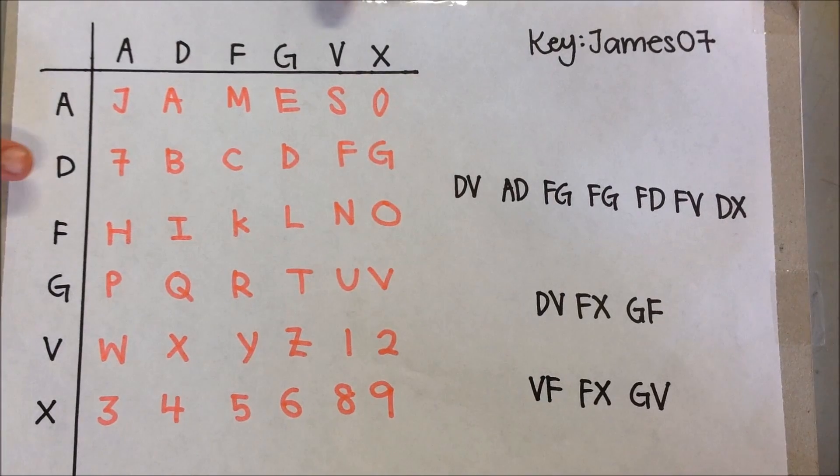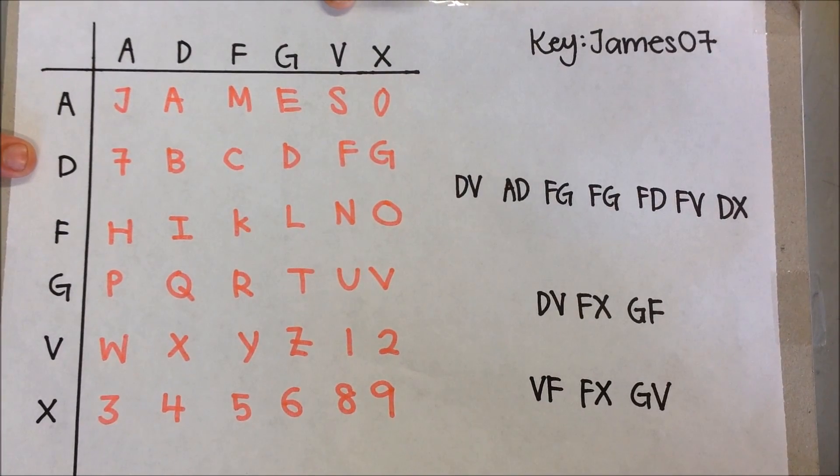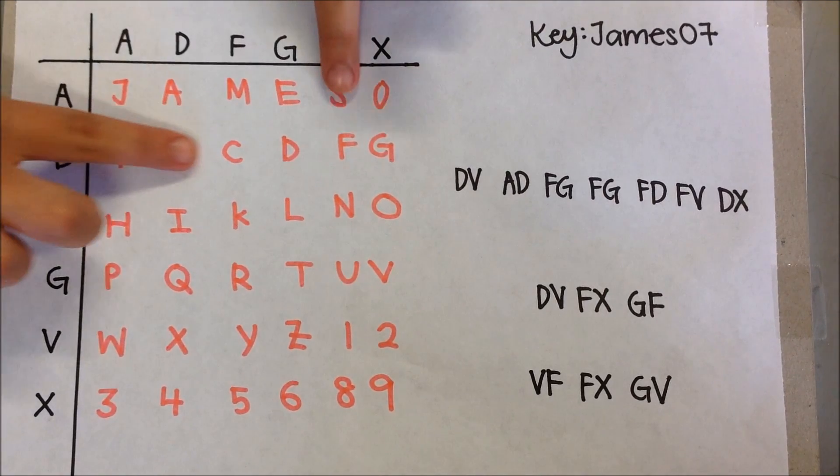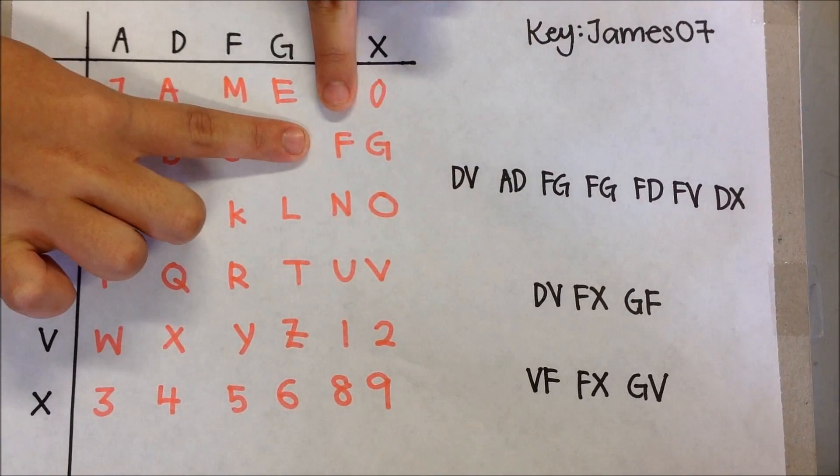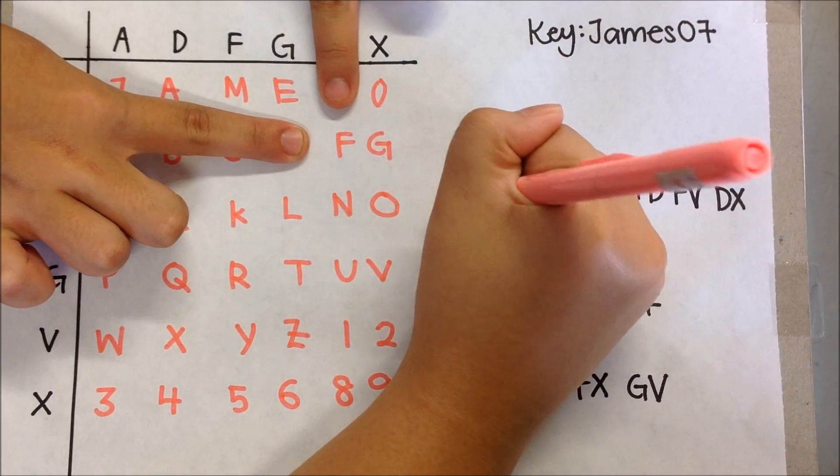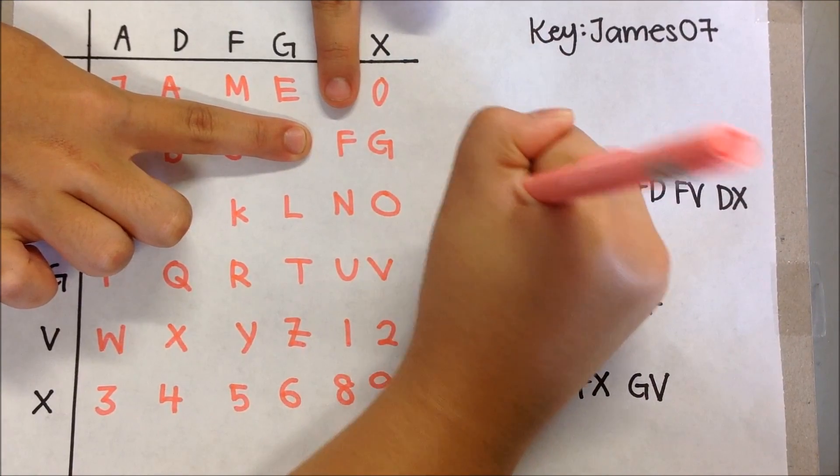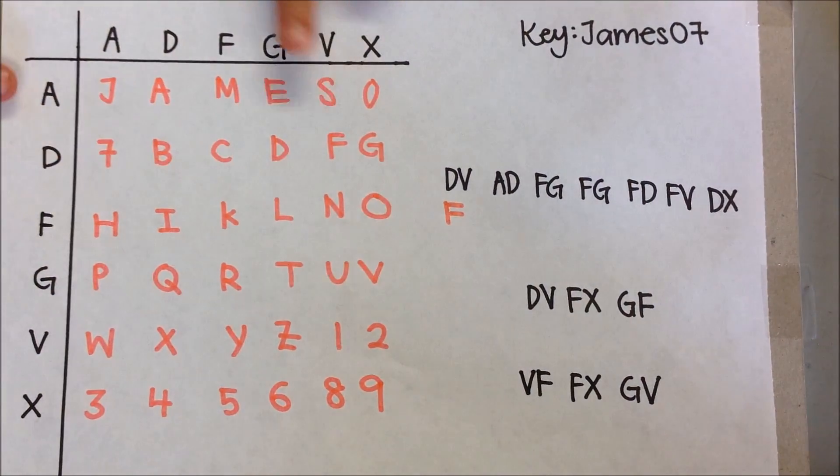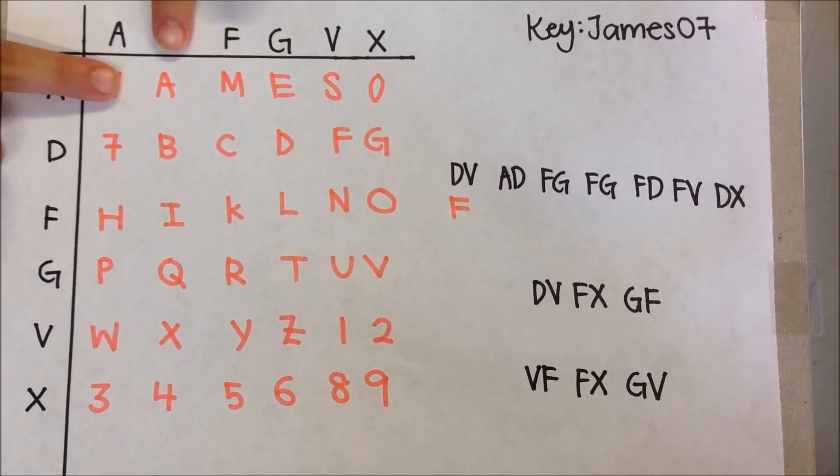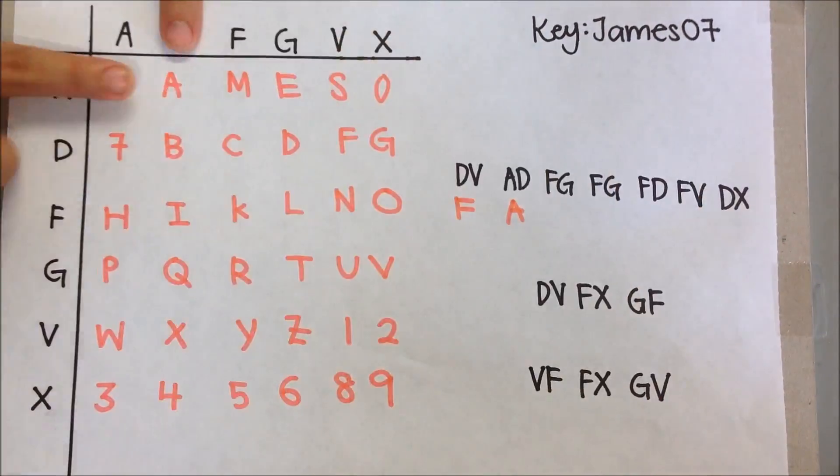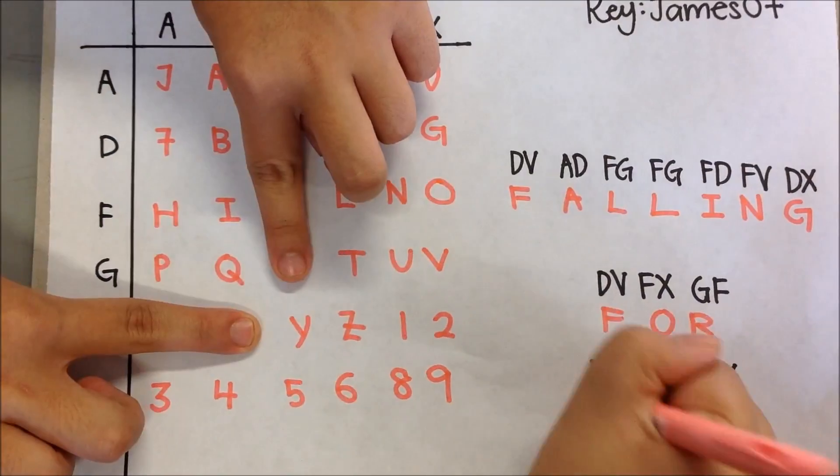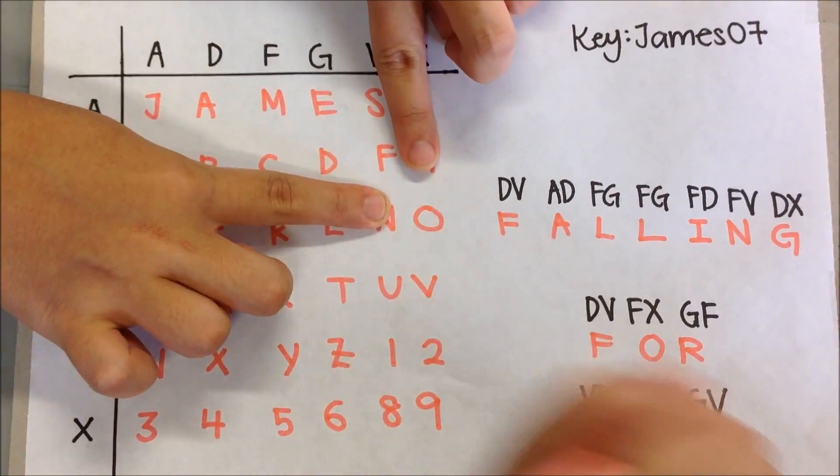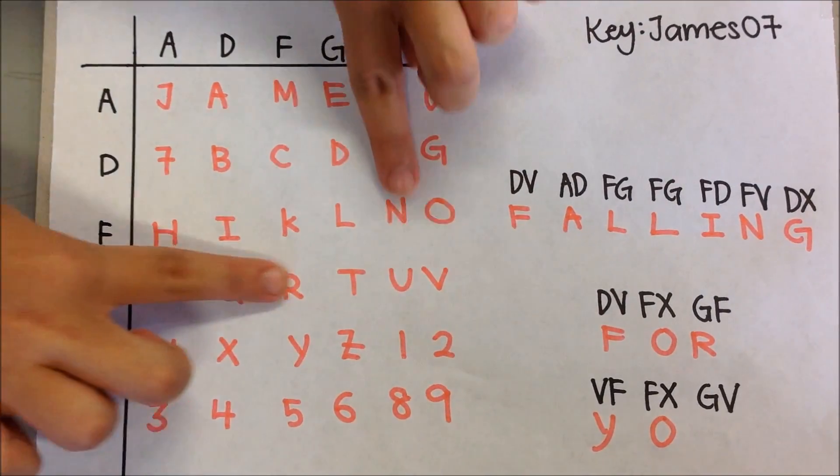Now time to decrypt the message. Firstly, DV means that the letter that we are supposed to find is in row D column V. Therefore, the letter that we are supposed to find is the letter F. Next, AD represents row A and column D. Hence, the next letter is A. Using this method, continue to decrypt the rest of the message. The completed decrypted message will be Falling for you.